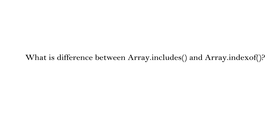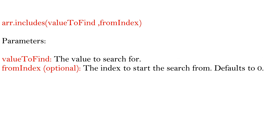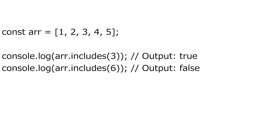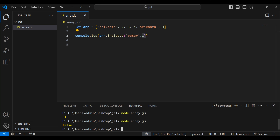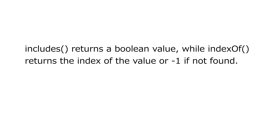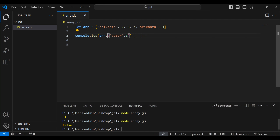What is the difference between indexOf and includes? The includes method also takes two parameters: the value to search and the optional starting index — same as indexOf. The key difference is that array.includes returns a boolean: true if the value is present, false if not. For example, searching for 'peter' with includes returns false. That is the main difference between array.includes and array.indexOf.